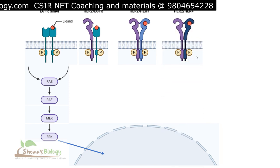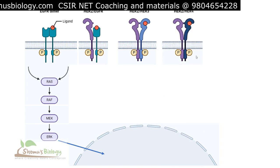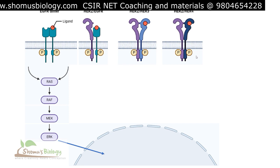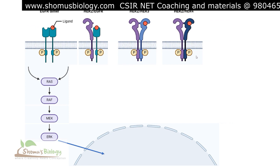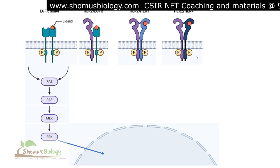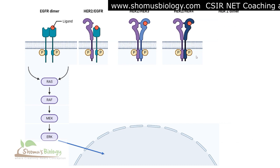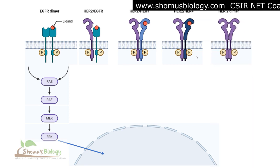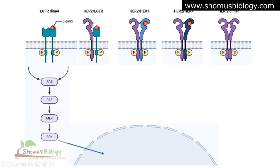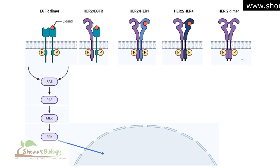Another pair is HER2 with HER4 — HER2 is purple and HER4 is dark blue — and again upon signaling molecule binding the cytosolic site gets phosphorylated. Finally, there is the HER2 homodimer, where two HER2 molecules associate together. Signaling molecule binding causes phosphorylation of the cytosolic site of the HER2 homodimer, making it active.